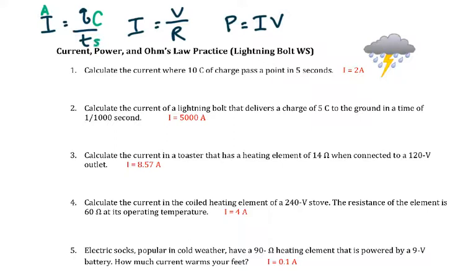T, of course, is time in seconds. I is always current, so still measured in amps here. V is voltage, measured in volts. R is resistance, measured in ohms, and we use a Greek letter called omega to represent ohms.